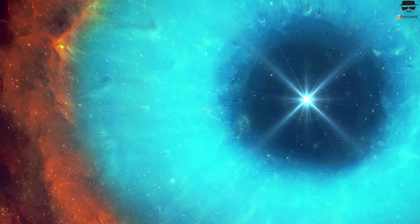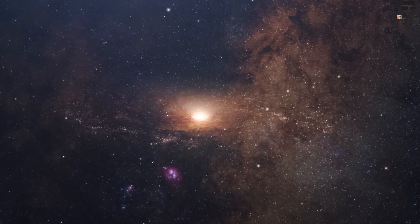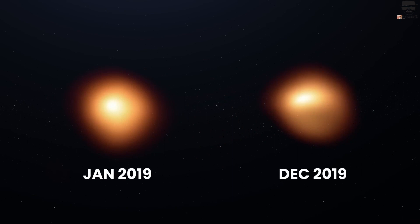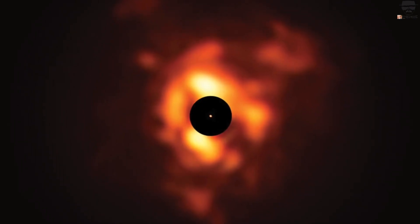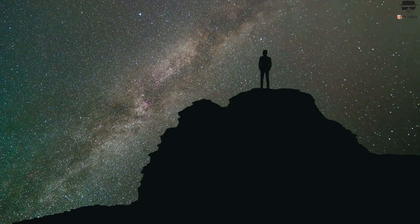Is Betelgeuse's explosion imminent? In 2019, something strange happened in the night sky. Betelgeuse darkened. The red giant suddenly lost about 40% of its luminosity. In observatories around the world, astronomers held their breath. They suspected that the giant was about to explode.